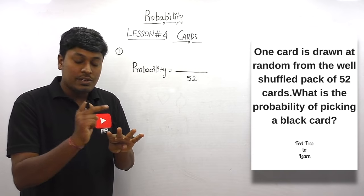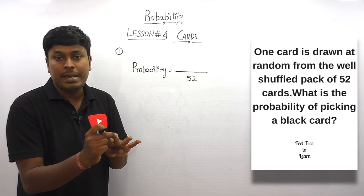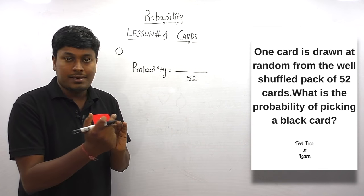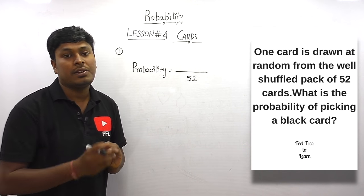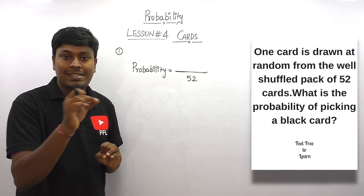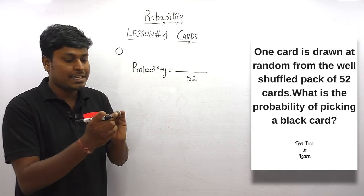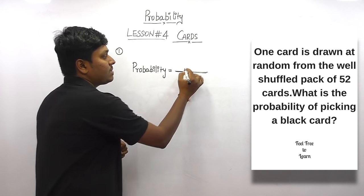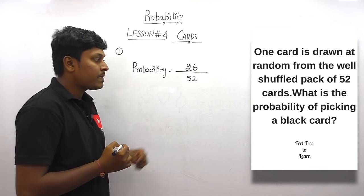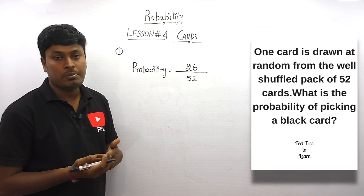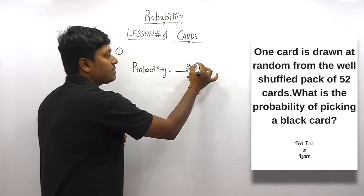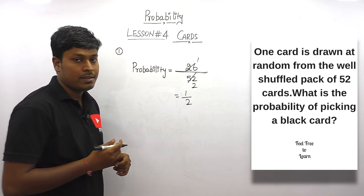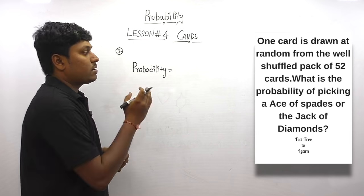We know that heart and diamond are red, and the remaining two shapes — club and spade — are black. Each shape has 13 cards, so 13 plus 13 gives 26 black cards. The sum of observations is 26, divided by 52. Cancelling gives 1 divided by 2. The answer for question number one is 1/2.